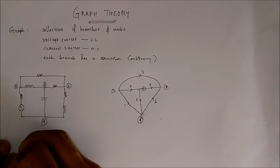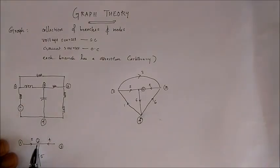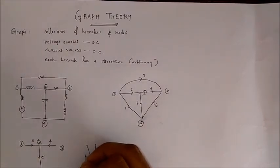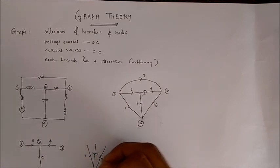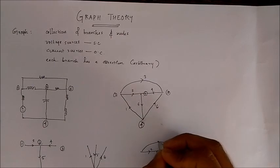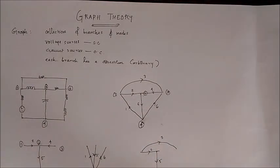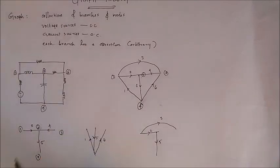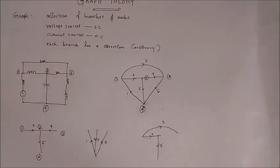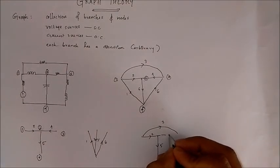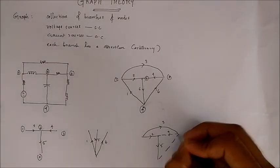Similarly, another possible tree uses branches one, five, and six, and another uses branches five, two, and three. These are the different trees possible for this graph. The branches included in a tree are called twigs, and the branches excluded while drawing a tree are called links. For example, for one tree the links — marked with dotted lines — are branches four, six, and one.